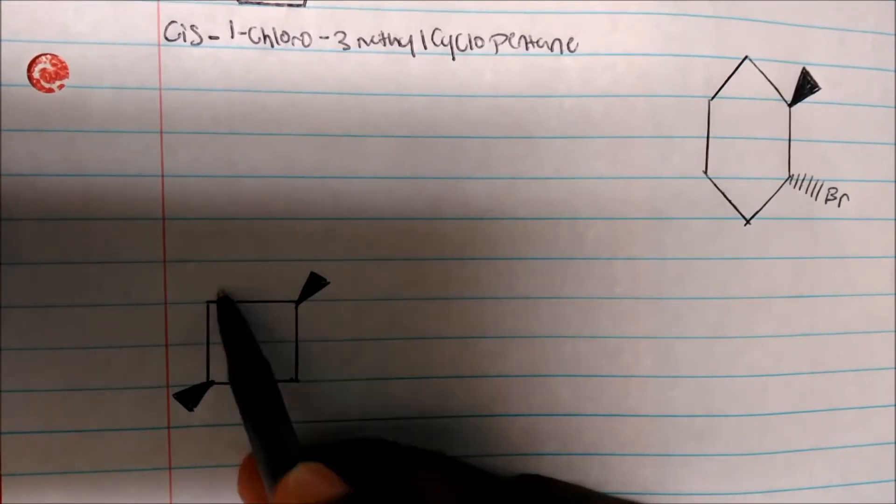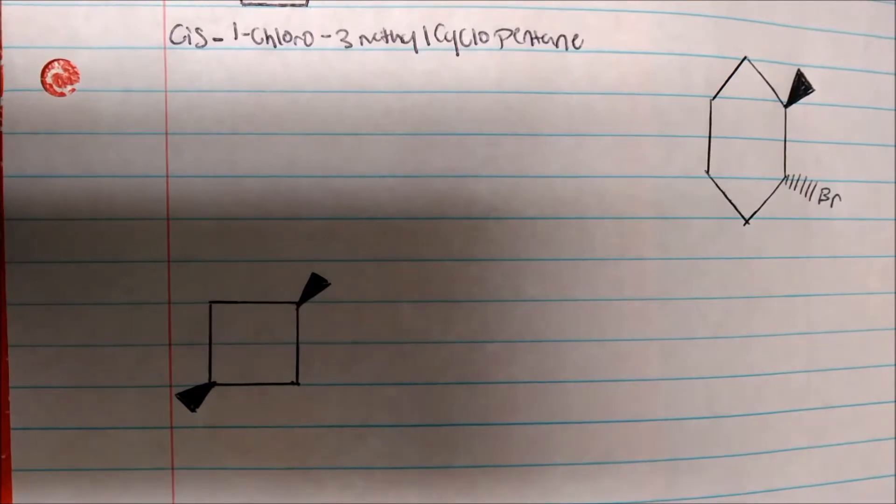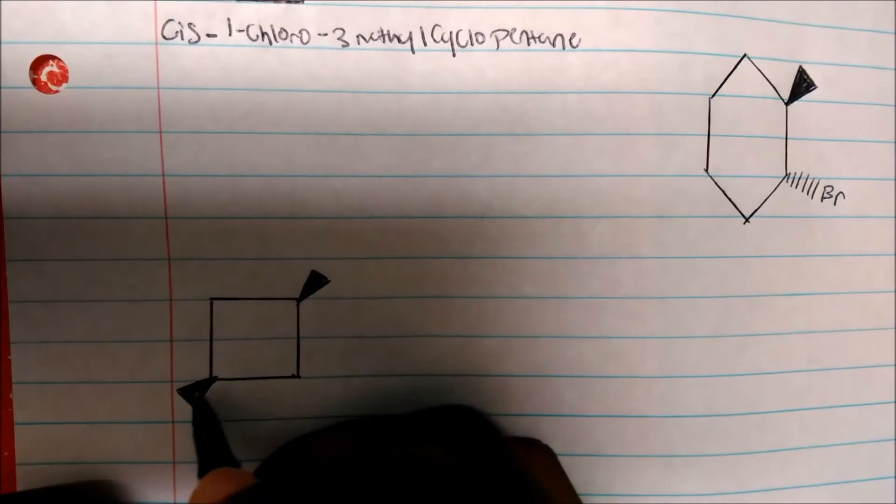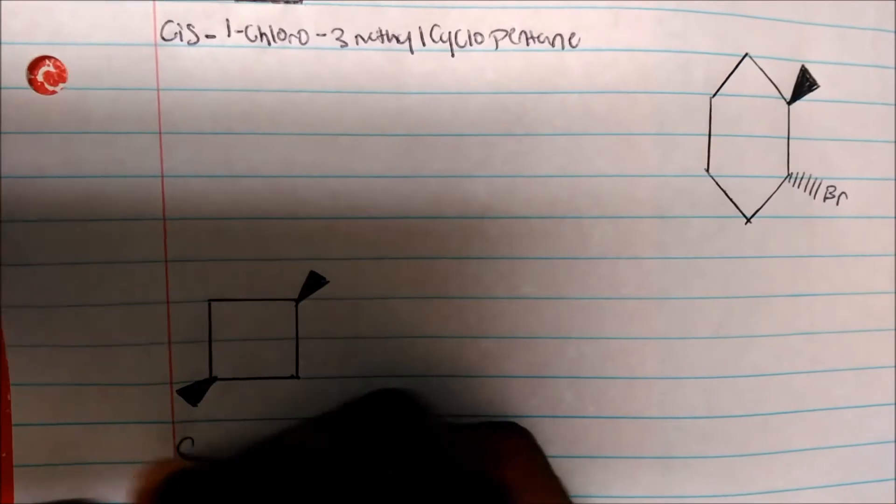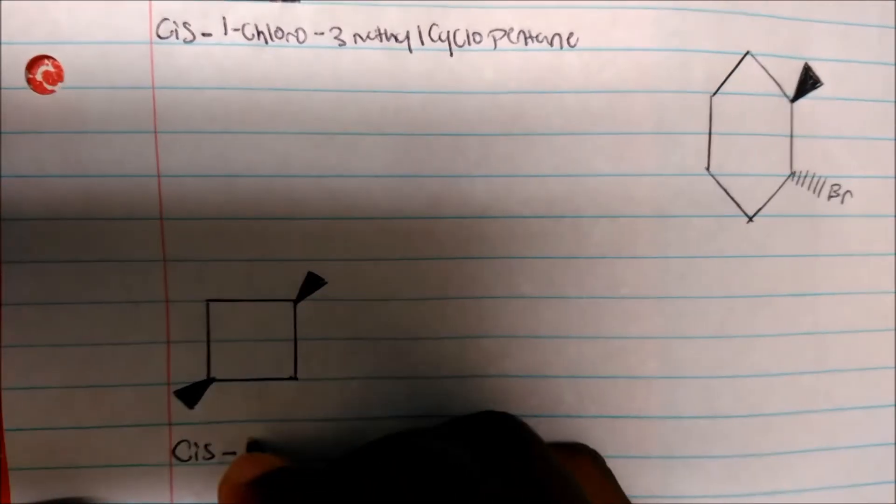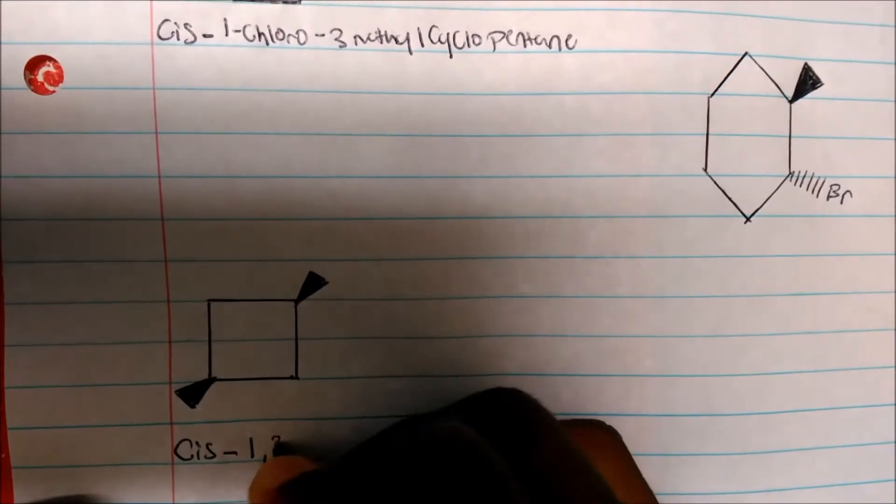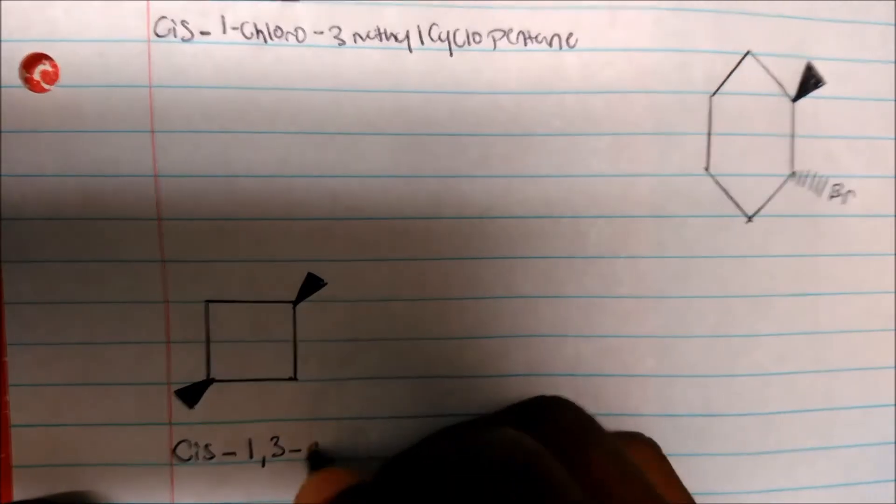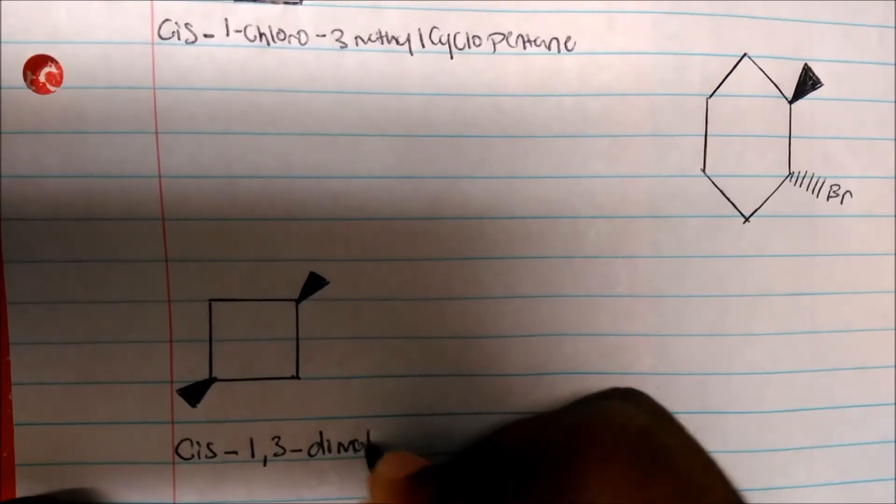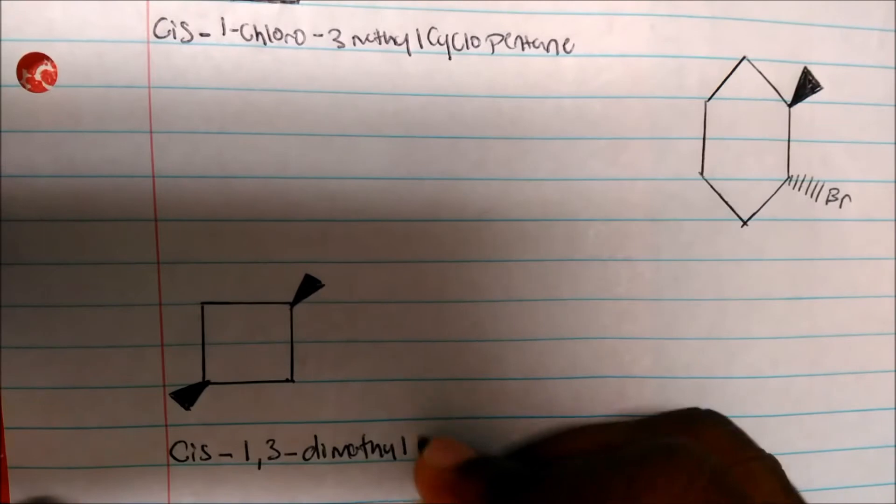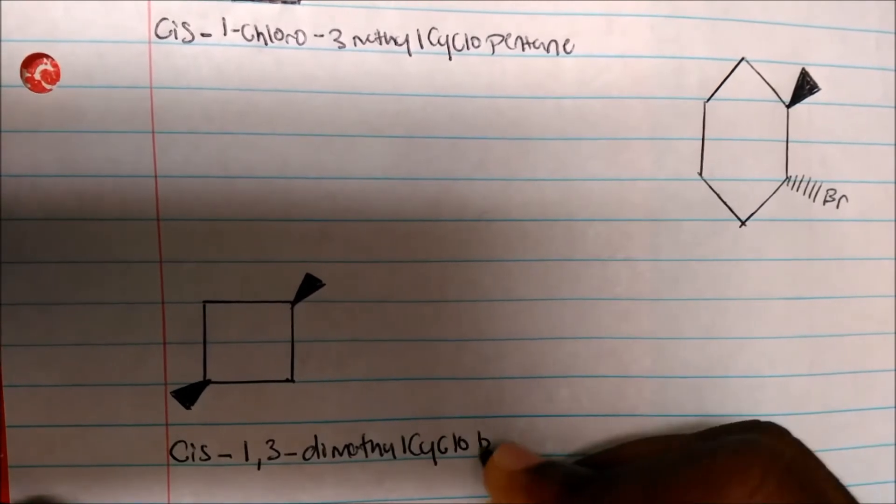It doesn't matter where I start coming from. One, two, three. One, two, three. Still be the same thing. So this, they're on the same side now. They both have two wedges. So this will be cis-1,3-dimethyl-cyclobutane.